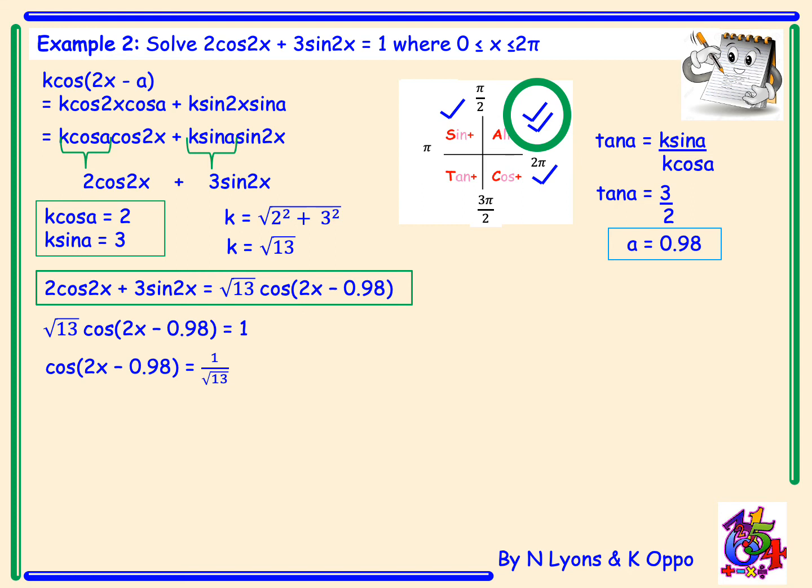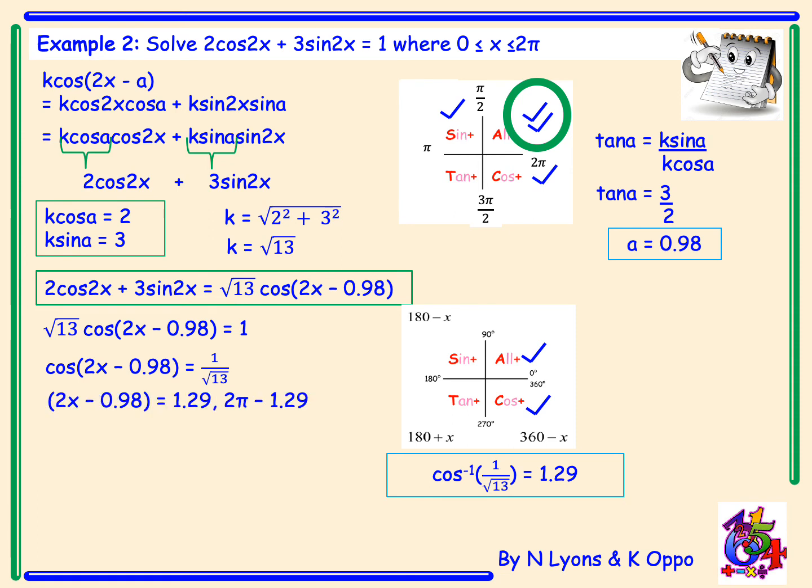Again I need to make sure I draw my cast diagram to ensure I'm looking for angles in the correct quadrants, and here cos is equal to a positive value so I'm looking for angles in A and C, and again your calculator will still be in radians. So if we do inverse cos of 1 over root 13 we'll get an answer of 1.29. So this 1.29 is the angle in A, so 2x minus 0.98 is equal to 1.29, but to obtain the angle in the fourth quadrant we need to do 2 pi take away 1.29. This will give an angle of 4.99.